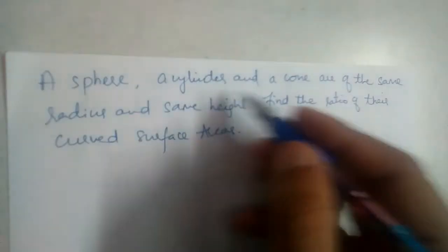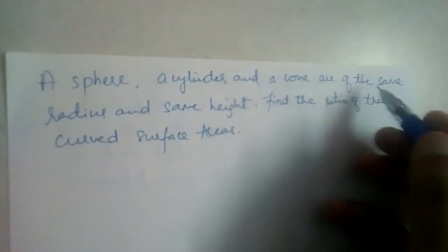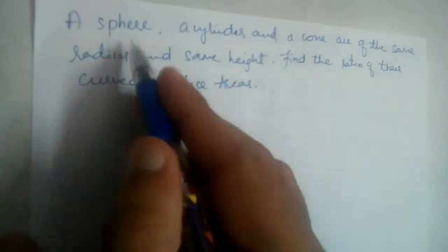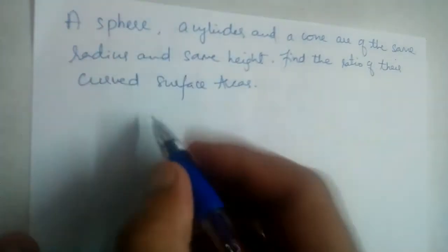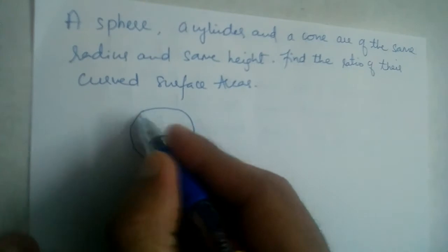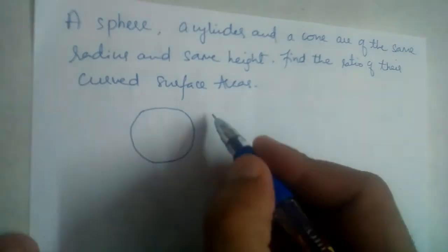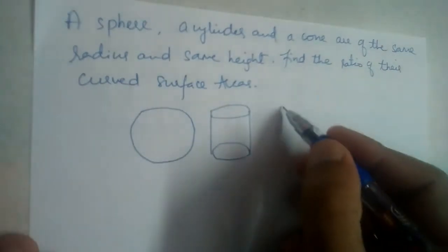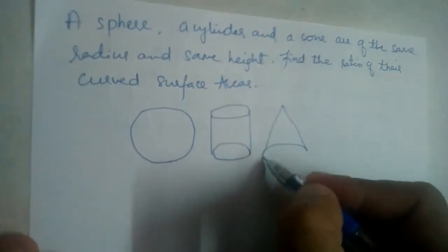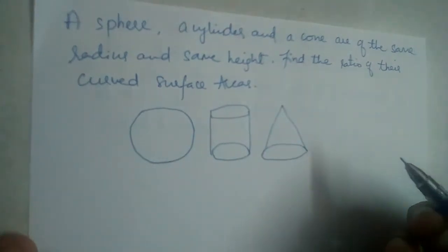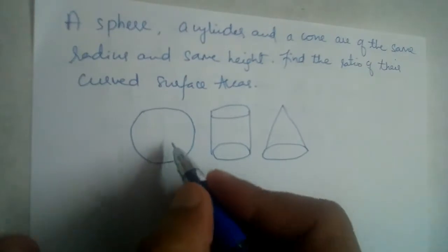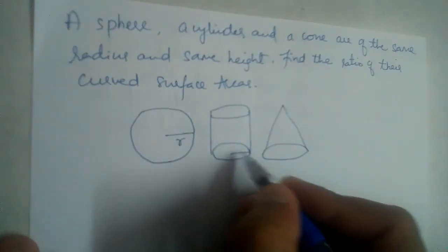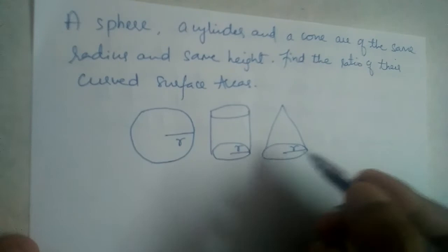A sphere, a cylinder and a cone are of same radius and same height. Let us draw three diagrams: a sphere, a cylinder and a cone. Suppose the radius is R for the sphere, this is also R for the cylinder, and this is also R for the cone — same radius.